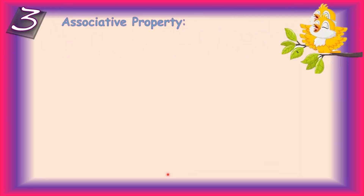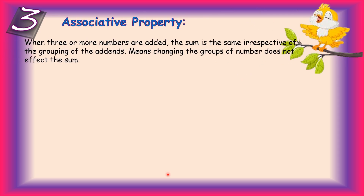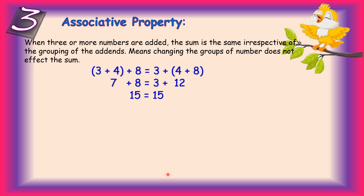The third property is the associative property. Associate means to connect or join something. According to this property, the sum of three or more numbers remains the same irrespective of how they are grouped — changing the grouping of numbers in the addition statement does not affect the sum. In this example, both sets have the same numbers, only the groups are changed. In the first set, 3 plus 4 makes a group; in the second set, 4 plus 8 makes a group. See: 3 plus 4 is 7, 7 plus 8 is 15. And 8 plus 4 is 12, 12 plus 3 is also 15. The sum is the same in both cases.